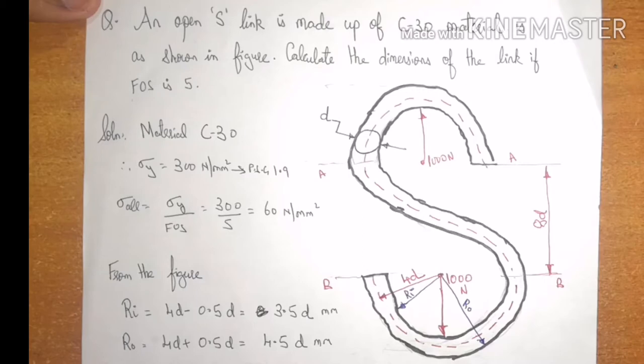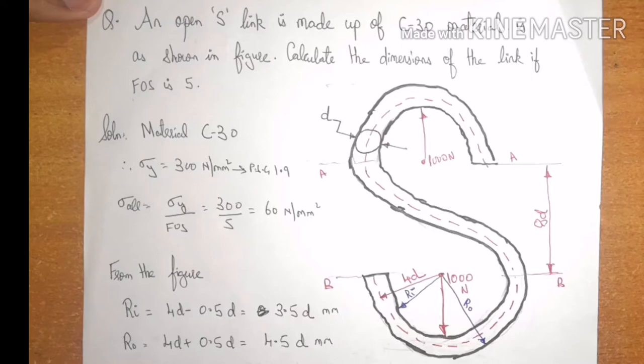Welcome students. In previous two videos, we have seen how to find out the load carrying capacity of the hook for trapezoidal and circular cross section. Now, let us see how to calculate the dimension of the hook if the load carrying capacity is given to us.